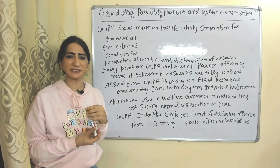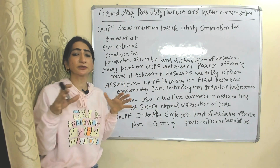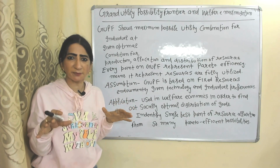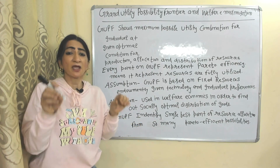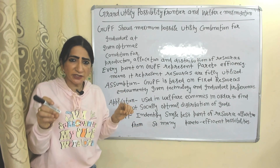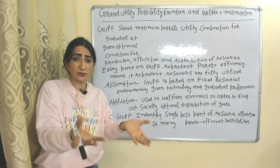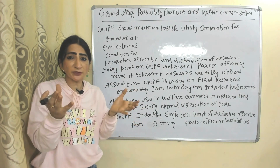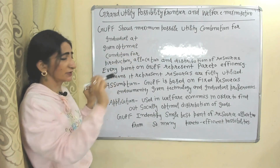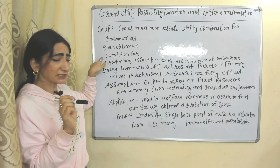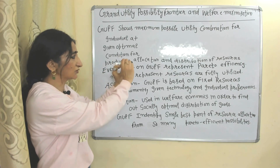Hello everyone, my name is Venus. Today we are going to talk about the Grand Utility Possibility Frontier and welfare maximization. GUPF shows a maximum possible utility combination for individuals at a given optimal condition for production, allocation, and distribution of resources.